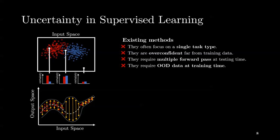However, existing methods for uncertainty estimations have limitations. They often focus on a single task type, they might be overconfident far from training data, they might require multiple forward passes at testing time, or they might require out of distribution or OOD data at training time, which is often rare or hard to obtain.